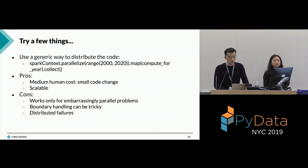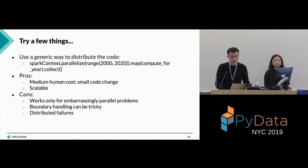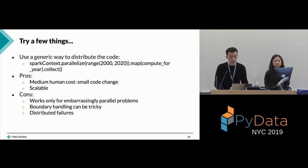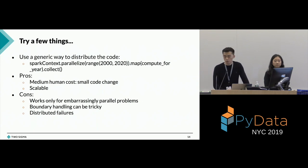The second thing we can try is to use a generic way to distribute our code. Here I'm giving a quick example using Spark. Assuming I'm analyzing time series data, what I'm doing is taking my time range — which is 20 years, from 2000 to 2020 — splitting it by year, sending the code to the cluster, and having each node compute only for one year. So that's a pretty straightforward approach. A lot of us use that approach in our day-to-day life. The advantage is it has very minimum human cost — you still have to make a little bit of code changes — but you can use the majority of your data analysis code. It's pretty scalable.